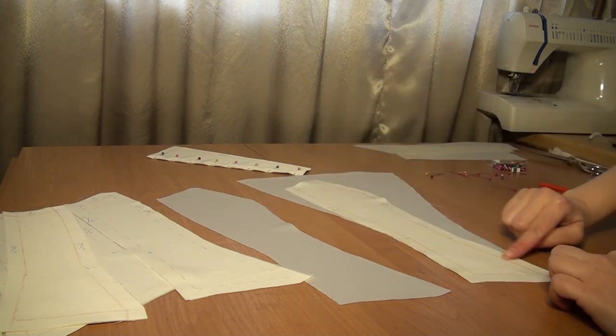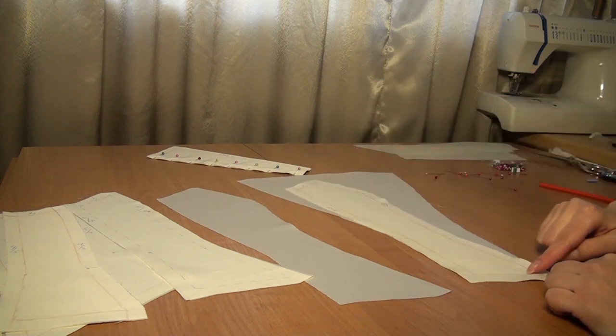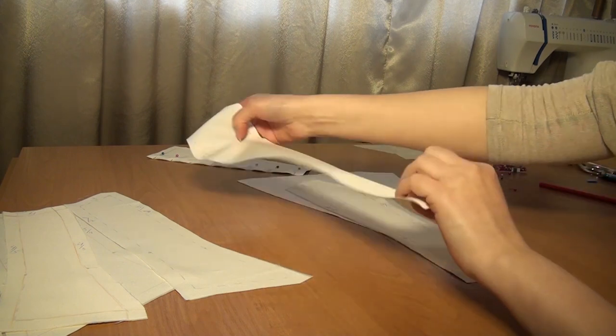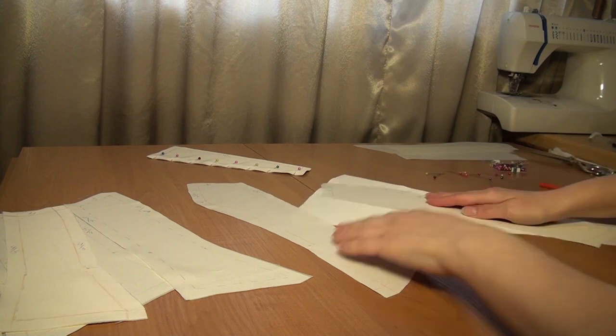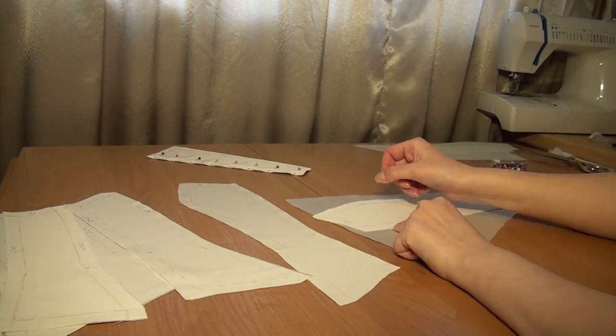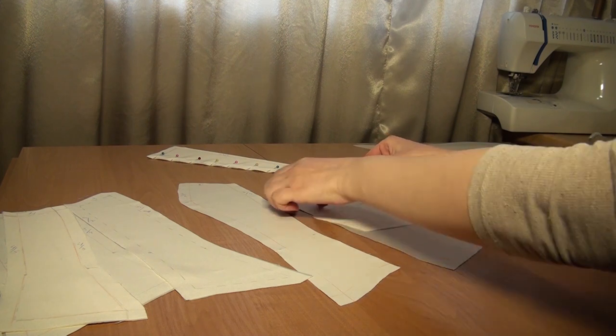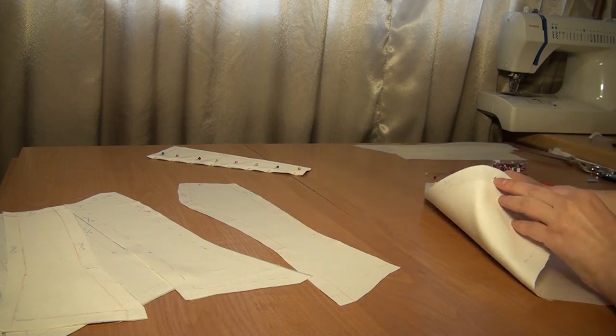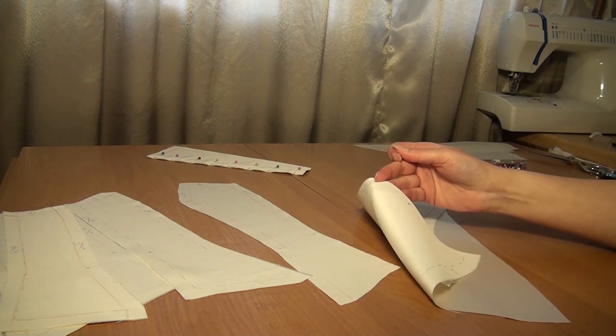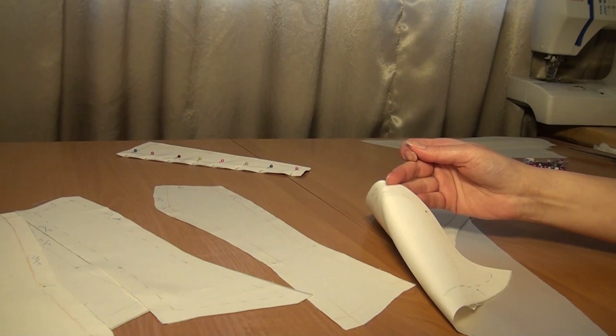For detail number two lines are drawn on all sections along which the seam will be sewn. Seam allowance on all seams is 1.5 centimeters. I combine the bust point for detail number two with the bust point for detail number one, and pierce both details at the point of the bust with a pin.